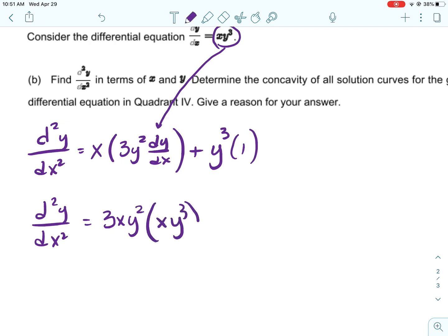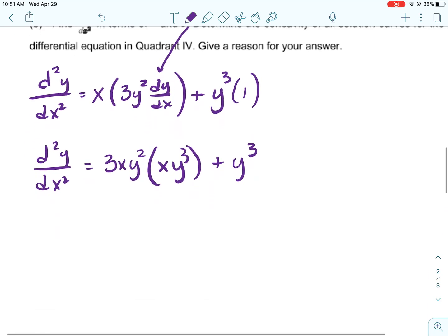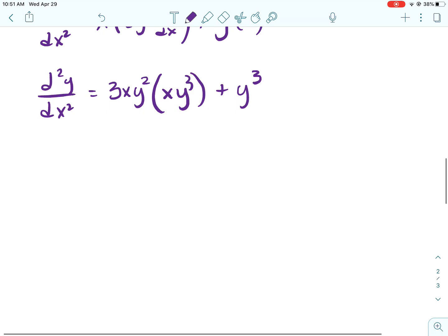Okay. So then, in the place of dy over dx, I'm going to put in what it equals. So it's 3xy squared times xy cubed.